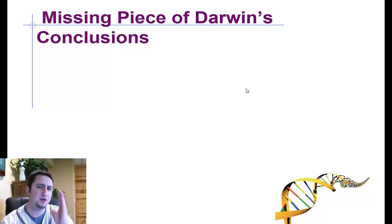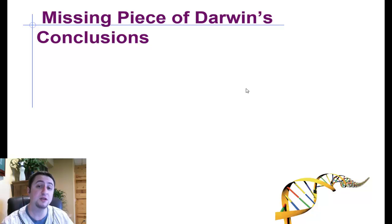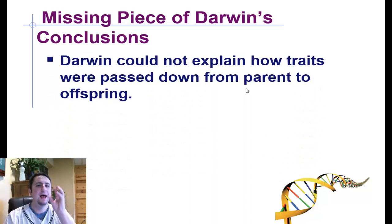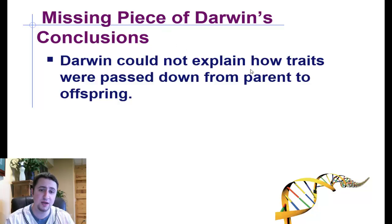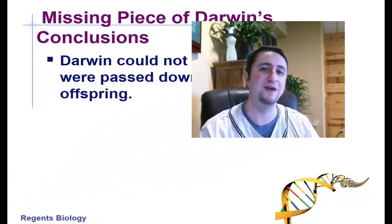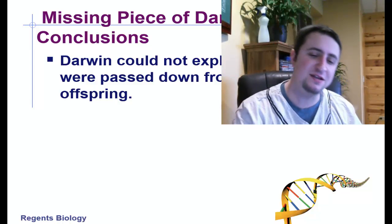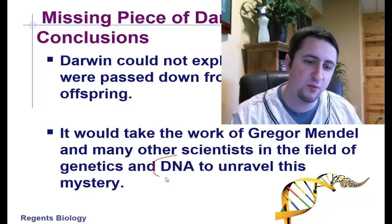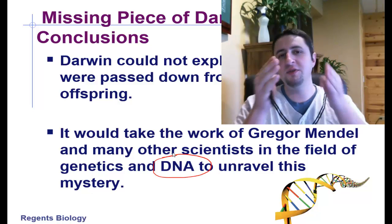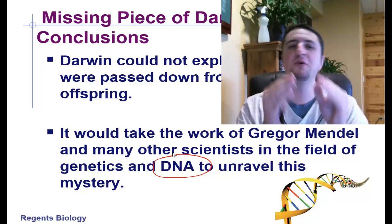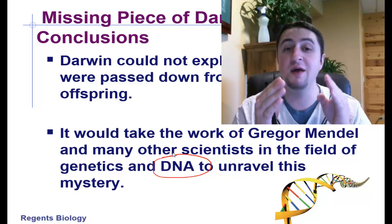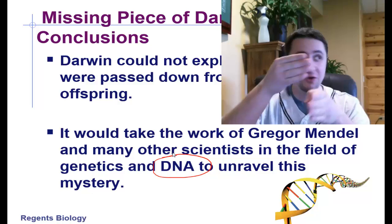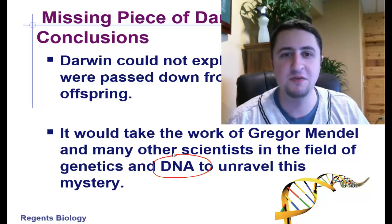Now there was one thing that Darwin couldn't really conclude. Darwin looked at macroscopic things — he looked at phenotypes, at things that he could see. But he didn't really understand — and remember, this was in the 1800s — he didn't understand how traits are passed down from parents to offspring. But you guys know it's in the DNA of organisms. Within the genes, within the DNA of organisms is a code for those phenotypes, or what people and organisms look like. And so those things are passed down from parents to offspring.